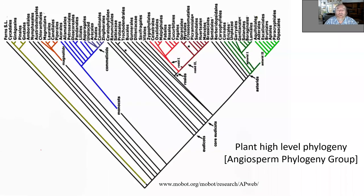Now, when we look at the individual lineages of plants, this is the high-level phylogeny of angiosperm plants created by the Angiosperm Phylogeny Group and updated on the web. We will not go systematically through it, but look at a few important lineages.